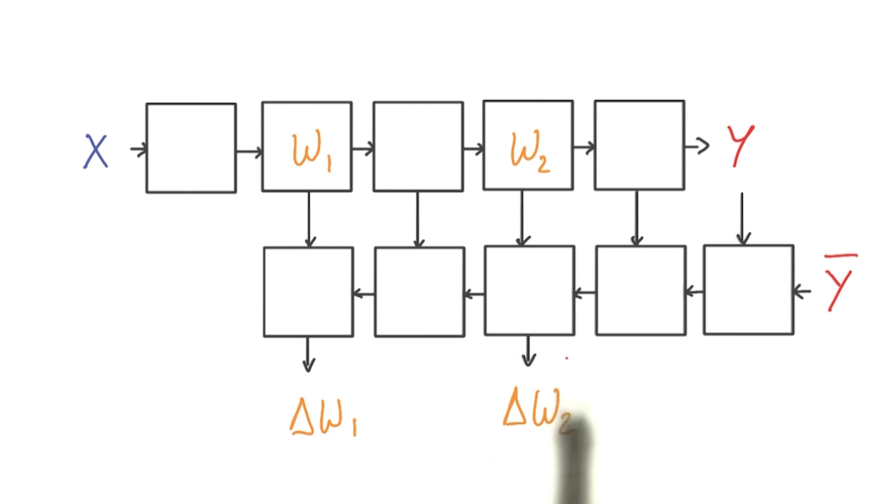That graph can be derived completely automatically from the individual operations in your network. So most deep learning frameworks will just do it for you. This is called backpropagation, and it's a very powerful concept.